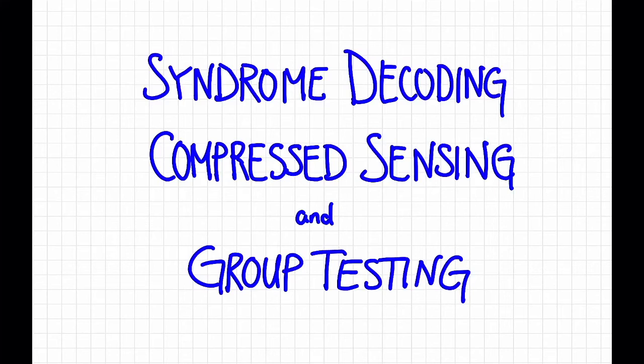In this video, we'll see how the problem of decoding linear error correcting codes is related to two other problems called compressed sensing and group testing.